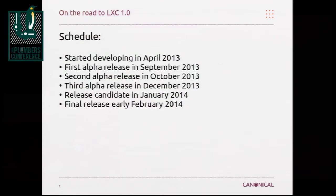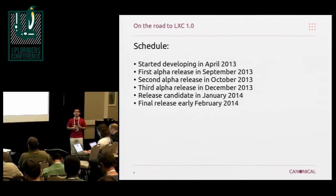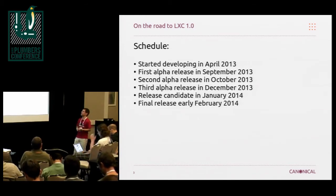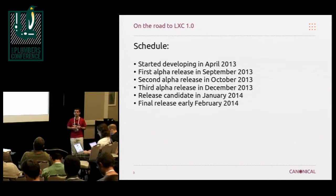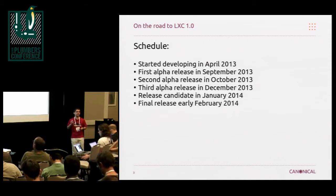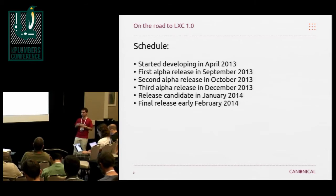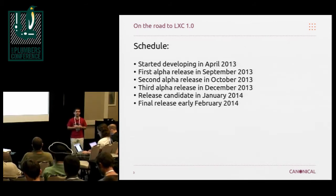That release is going to be a bit special because the past release was just three or four months of development. This one is massively more than that — we've got 10 months of development. We started in April, did the first alpha release a couple weeks back, then we've got milestones every month until we actually release in February. The February timeline happens to line up really well with Ubuntu because Ubuntu 14.04 long-term support release will be releasing in April 2014.